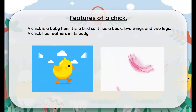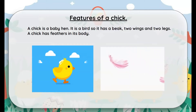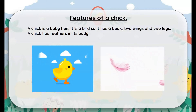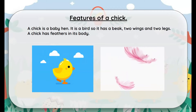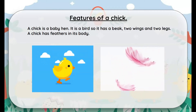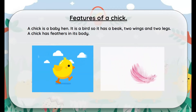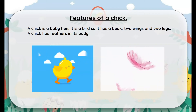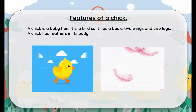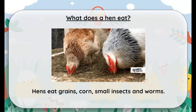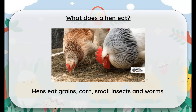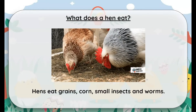Let's see the features of a chick. A chick is a baby hen. It is a bird, so it has a beak, two wings to fly, and two legs to walk. A chick has feathers on its body. Now let's see what a hen eats.